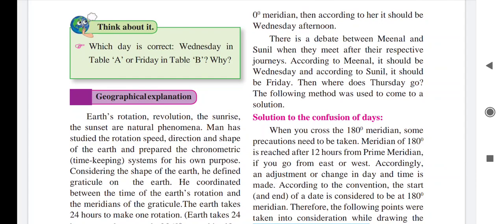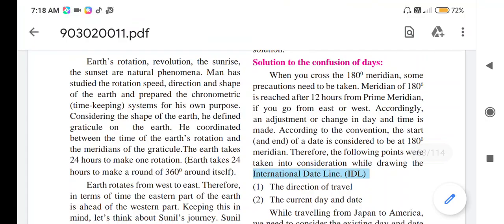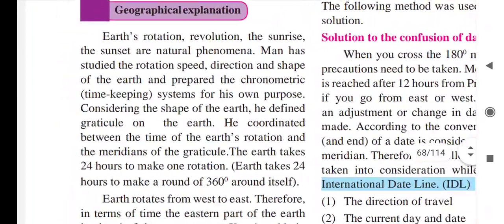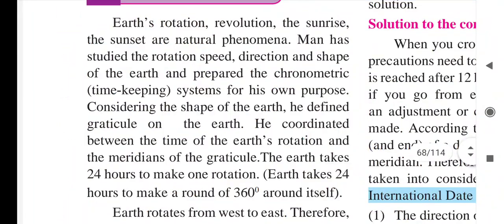Now we will study the next point: a geographical explanation. The earth's rotation, revolution, sunrise, and sunset are natural phenomena. Man has studied the rotation speed, direction, and shape of the earth, and prepared a chronometric — meaning time-keeping — system for his own purpose. Considering the shape of the earth, he defined the graticule on the earth, coordinating the time of the earth's rotation with the meridians of the graticule.